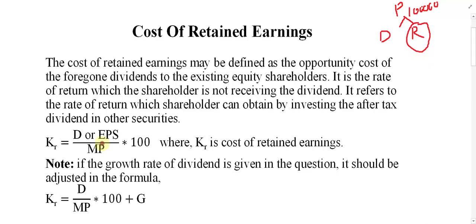There is a formula to find this out. Retained earning means the amount of profit which is not distributed to the existing shareholders, so they expect some profit out of it — that is the cost of retained earning. The formula is: Kr = D (dividend) or EPS (earnings per share) divided by market price, multiplied by 100. We don't have NP here because retained earning applies only to existing shares, so we use only MP.